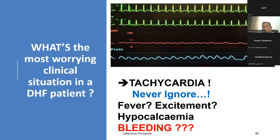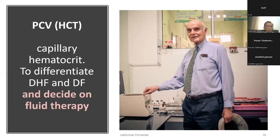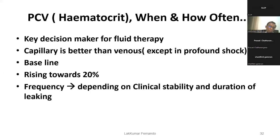During an epidemic, bleeding is common — I currently have three patients who are bleeding and have needed blood transfusions. Whenever you have tachycardia, hematocrit is an important tool to differentiate DF from DHF and guide fluid therapy. Capillary hematocrit is preferred over venous as it is safer with regard to causing sepsis. In shock, capillary PCV can be unreliable. Frequency of PCVs depends on clinical condition; the guideline recommends every six hours in general.